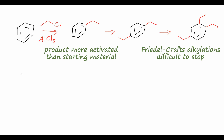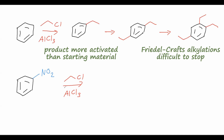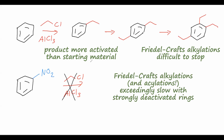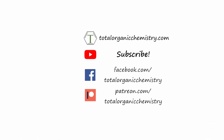This leads to the over-alkylation effects that make Friedel-Crafts alkylations very difficult to stop at just one alkylation. Another factor to consider: nitrobenzene with its NO2 group, treated under the same conditions with ethyl chloride and aluminum trichloride, will really not undergo Friedel-Crafts alkylation to any appreciable extent because the nitro group is very electron withdrawing and deactivating. That is yet another important factor in electrophilic aromatic substitutions. I hope this video helped you understand the effects of activating and deactivating groups on EAS reactions.